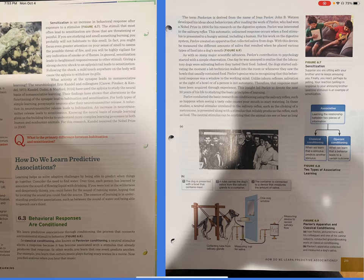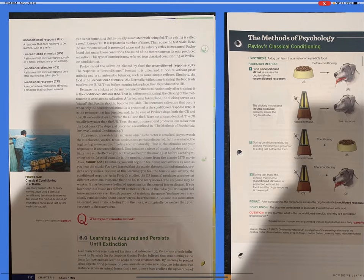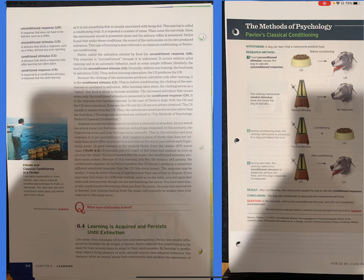Pavlov conducted basic research on conditioning using the salivary reflex, such as happens when seeing a tasty cake causes your mouth to start watering. In these studies, a neutral stimulus unrelated to the salivary reflex, such as the clicking of a metronome, is presented along with a stimulus that reliably produces the reflex, such as food. The neutral stimulus can be anything that the animal can see or hear, as long as it is not something that is usually associated with being fed. This pairing is called a conditioning trial. It is repeated a number of times. Then come the test trials. Here, the metronome sound is presented alone and the salivary reflex is measured. Pavlov found that under these conditions, the sound of the metronome on its own produced salivation. This type of learning is now referred to as classical conditioning, or Pavlovian conditioning.